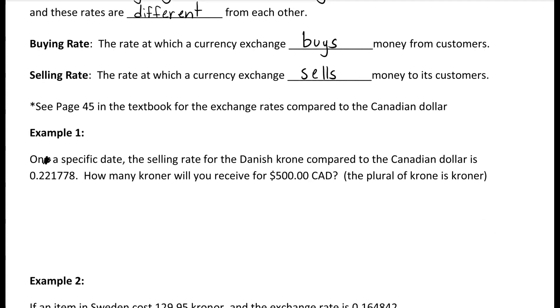For example 1, on a specific date the selling rate of a Danish krone compared to the Canadian dollar is 0.221778. How many krone will you receive for $500 Canadian? The plural for krone is krone.